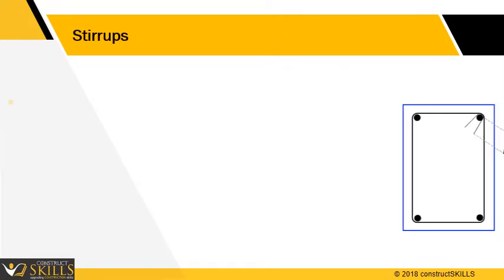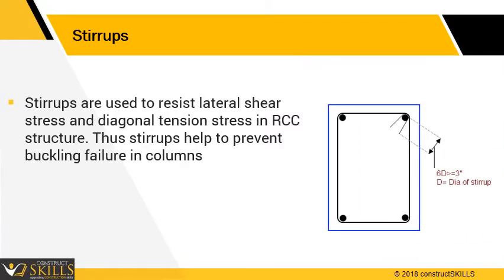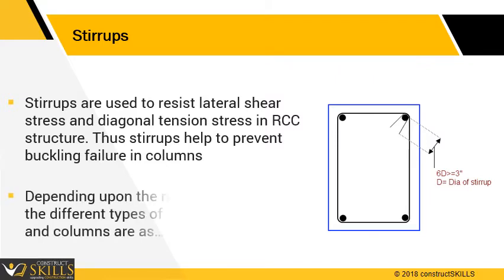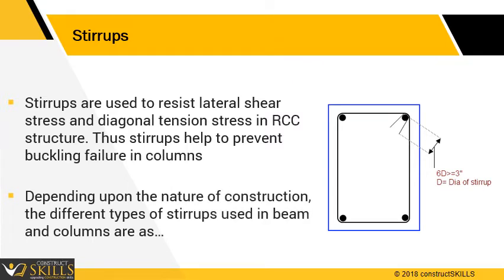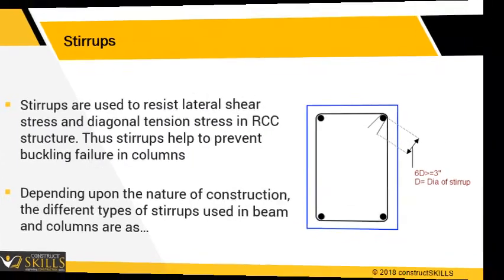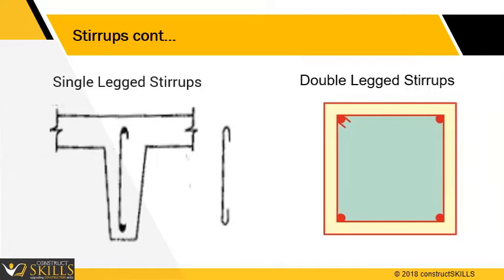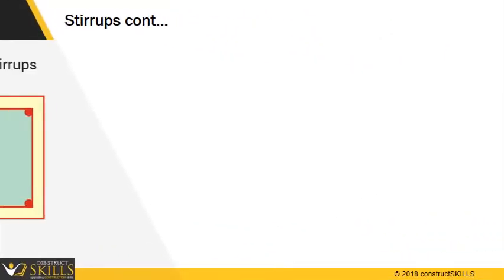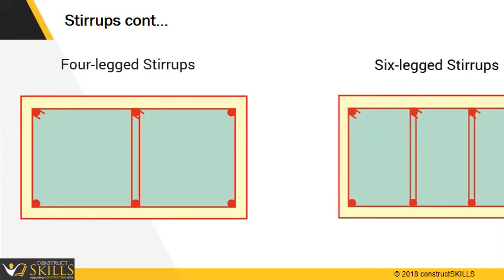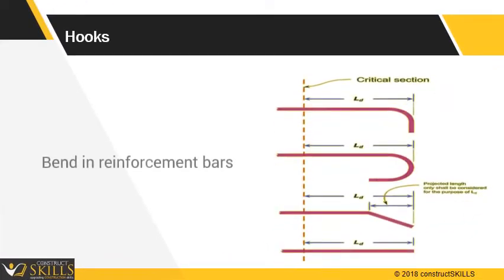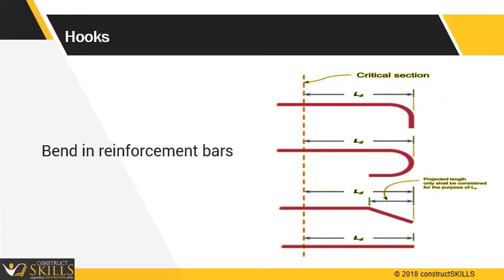Stirrups are used to resist lateral shear stress and diagonal tension stress in RCC structures. Thus stirrups help to prevent buckling failure in columns. Depending upon the nature of construction, the different types of stirrups used in beams and columns are: single-legged stirrups, two-legged or double-legged stirrups, four-legged stirrups, and six-legged stirrups. Hooks are the bends provided at the edge of the stirrups and help for better bonding.